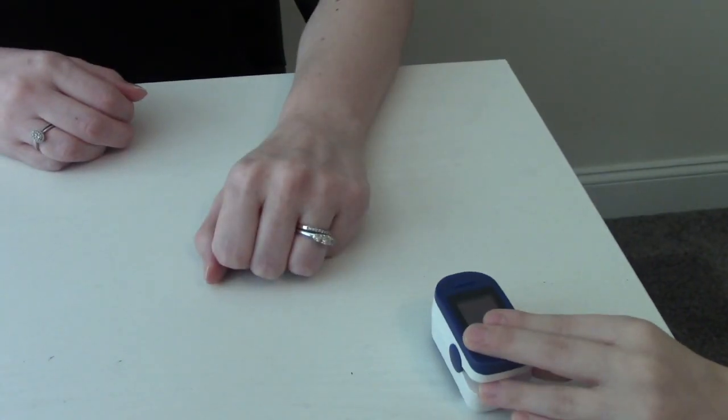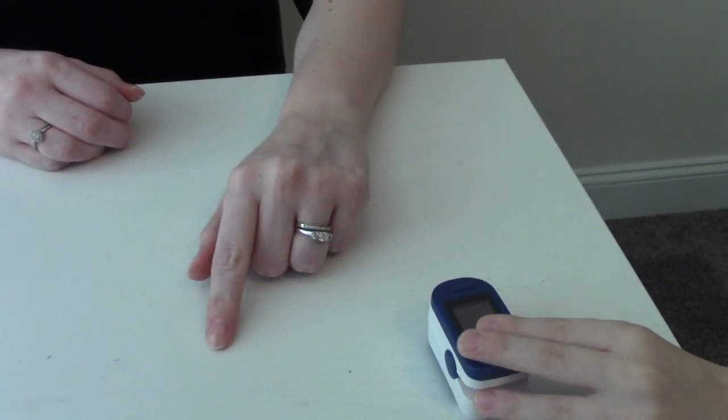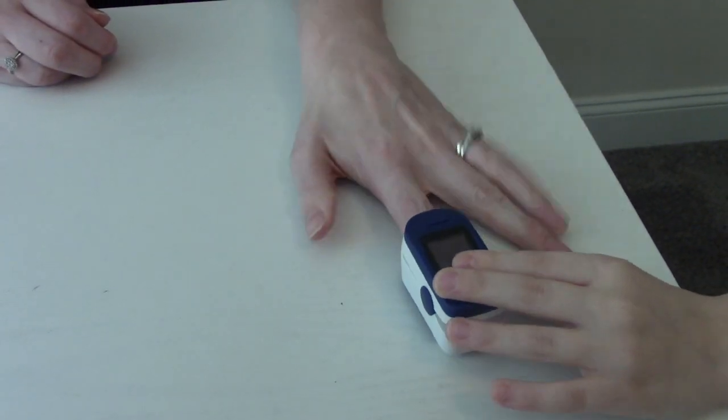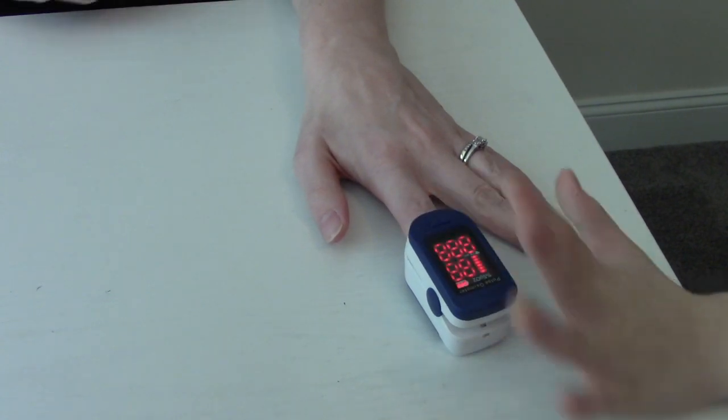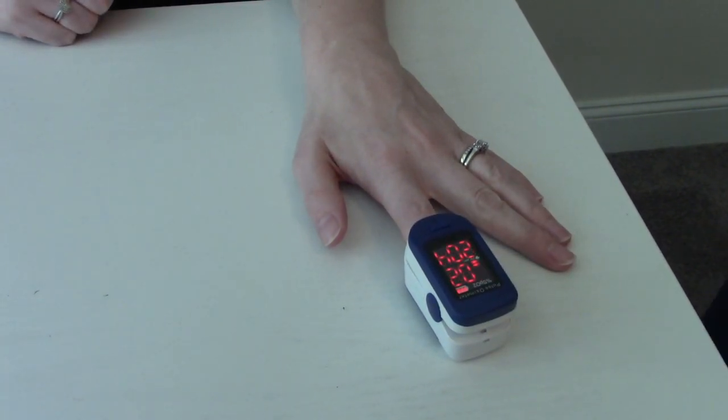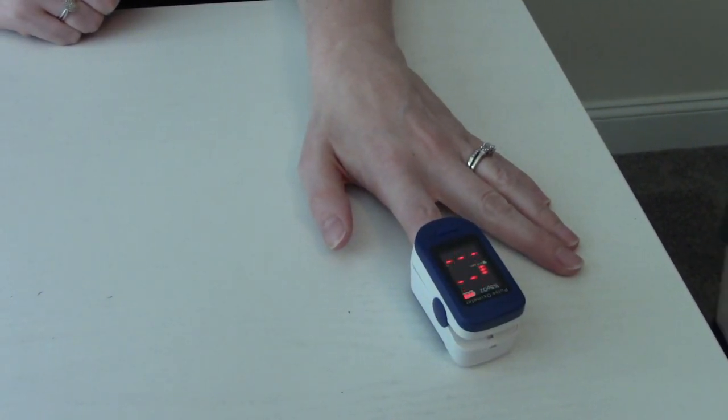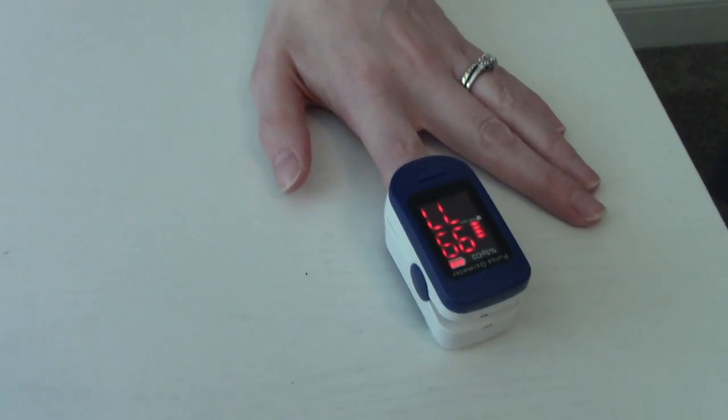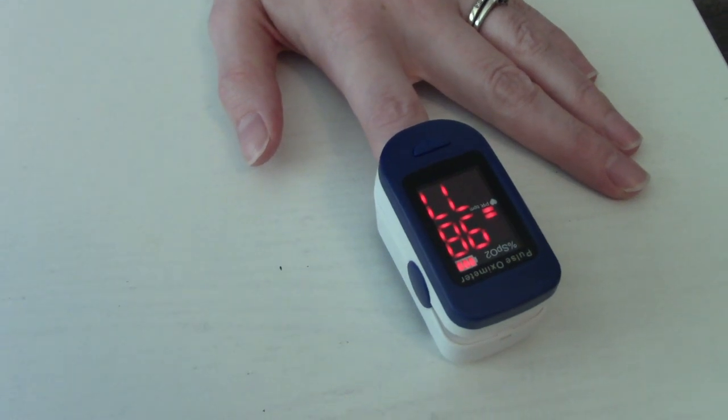To take a pulse ox, you'll need a little oximeter device like this. And it's very simple. You just place it on the finger, and then turn the button on. And this will tell us our O2, and it will also tell us our pulse. So for mine, 99% on room air, and then my pulse is 77 beats per minute. So that was my video on how to take vital signs.